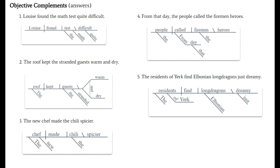Five. The residents of Yerk find Elbonian long dragons just dreamy. Who doesn't? So the residents find long dragons dreamy, and then we have the same structure that we've been looking at. Dreamy is the adjective version of an objective complement. It's telling us how the residents find the long dragons. Okay, I hope you enjoyed that. How'd you do? But we have one more bonus to look at.